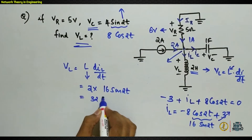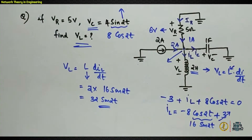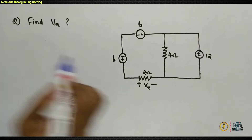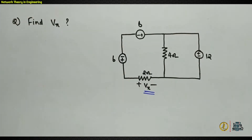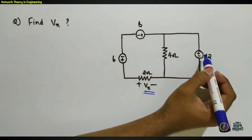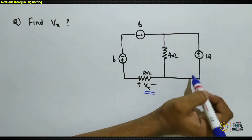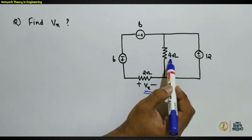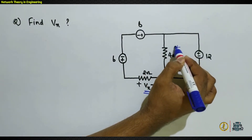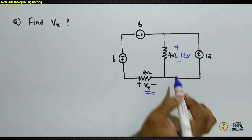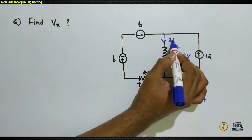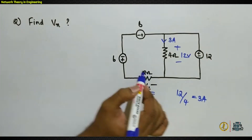The next question asks us to find VX, the voltage across the 2-ohm resistor. First, mark known voltages and currents. A 12-volt source appears across the 4-ohm resistor since they are in parallel, giving a current of 12/4 = 3 amperes through that branch. To find VX, take a loop that includes VX and apply KVL.